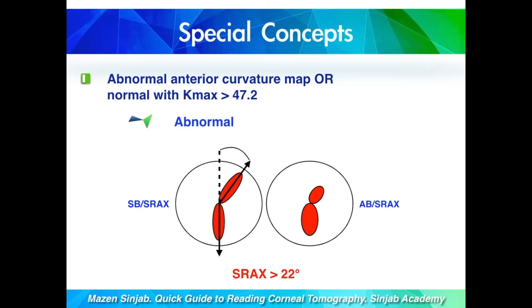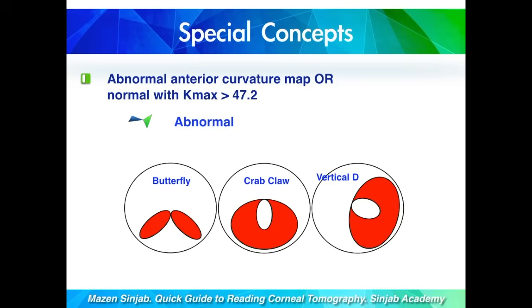When the patient shows symmetric or asymmetric bowtie with skewed radial axis above 22 degrees, it is abnormal. When the patient shows special types such as butterfly, crab claw, and vertical D, it is also abnormal.